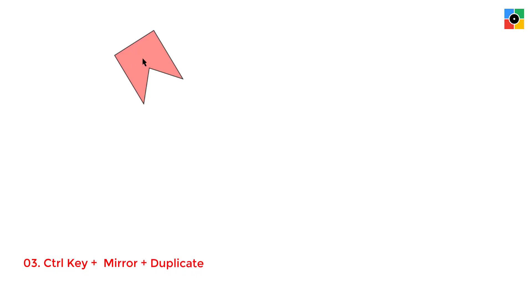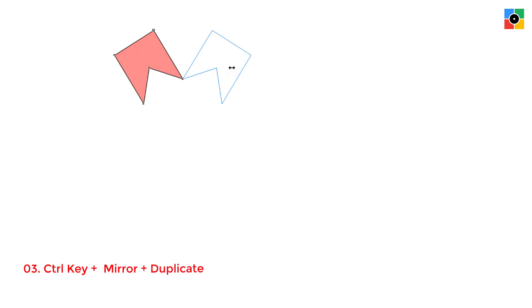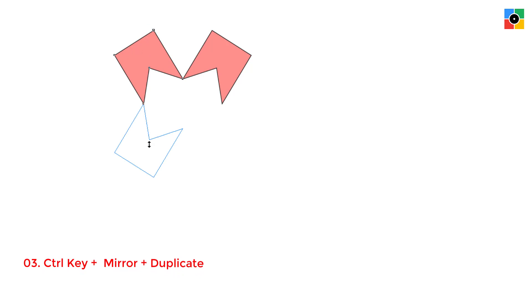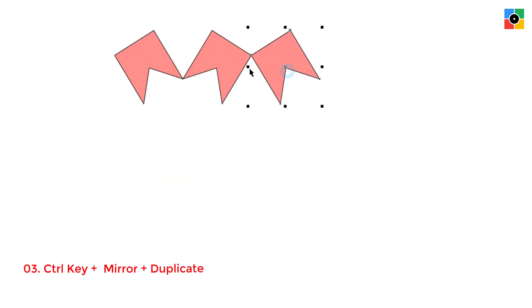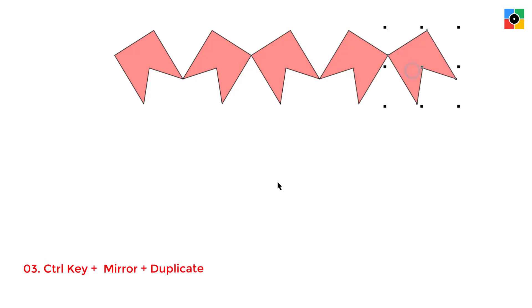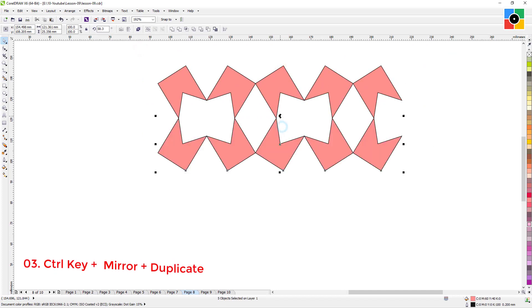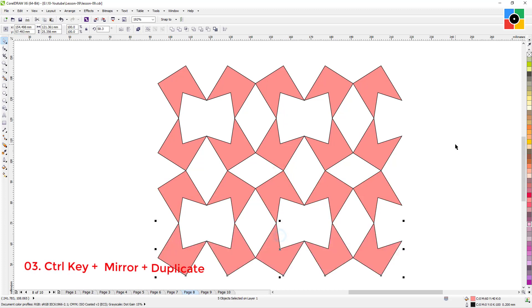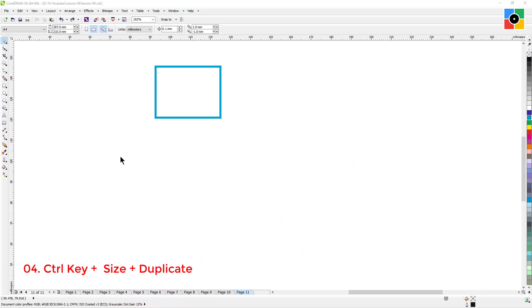To create 100% perfect mirror duplicate objects: select an object, press and hold the Ctrl key, click and hold the left center handle, move the cursor to the right side of the object, click and hold the right mouse button, leave the left mouse button first, then leave the right mouse button, and finally leave the Ctrl key. This creates a 100% perfect horizontal mirror duplicate object. The same way you can create a 100% perfect vertical mirror duplicate object. Using the Ctrl key, mirror and duplicate commands simultaneously, you can create 100% perfect horizontal and vertical mirror multiple duplicate objects.